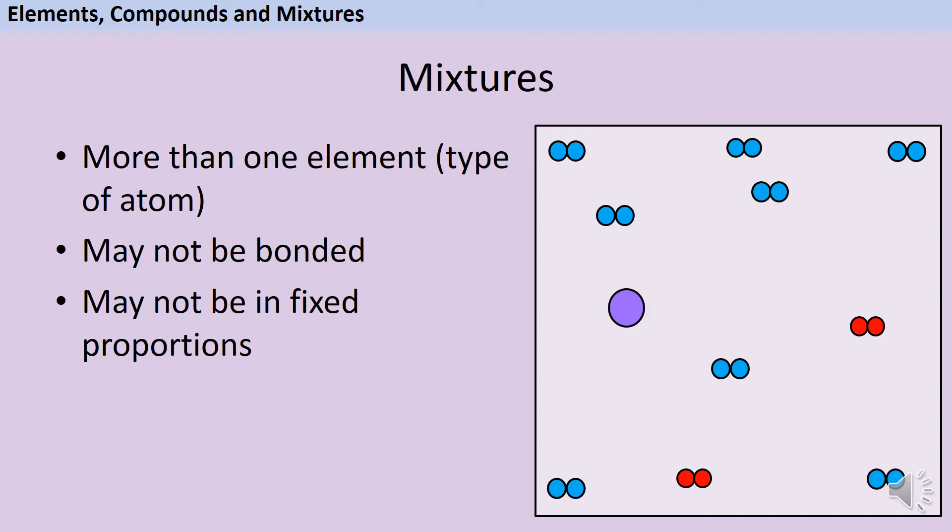Mixtures are a little bit harder to define because there isn't just one kind of mixture. A mixture is just anything that isn't an element and isn't a compound. So one thing we can say is that a mixture will contain more than one element or more than one type of atom.